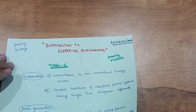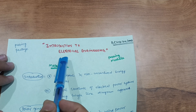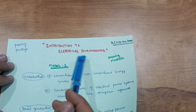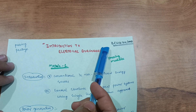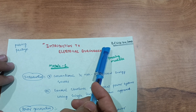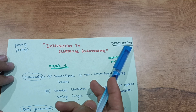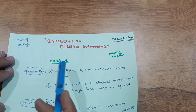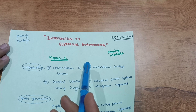Hello everyone, welcome back to my channel. Today I am with another passing strategy video for Introduction to Electrical Engineering. If you want to pass this subject, stay connected with me till the end. I will discuss some important questions related to this subject. The subject code is BESK A 104 or 204B. Let me discuss how many modules are passing in this particular subject.